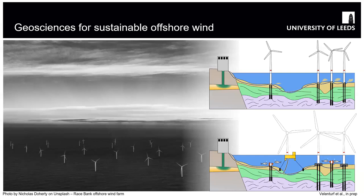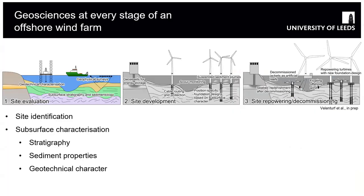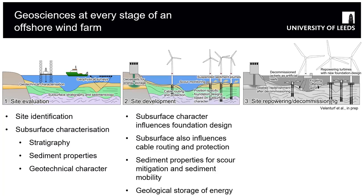First and foremost is site identification — where is the best place to put your offshore wind farm — and we do that mainly through characterising the subsurface through geophysical surveys and acquiring geotechnical logs. We need to characterise the subsurface in terms of the stratigraphy and the properties of the sediment. But that's not the only role of geosciences; once the wind turbines are in place we can monitor how the structures are doing in the subsurface, including things like scour.